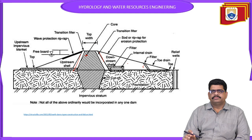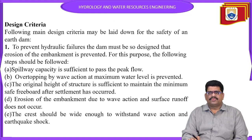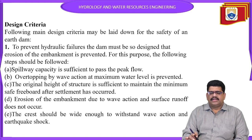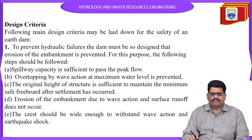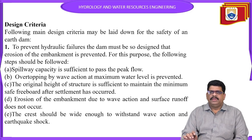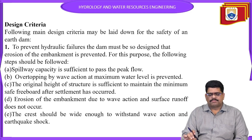Now the design criteria for construction of earthen dams. The design criteria means steps to prevent hydraulic failures, erosion of the embankment, and any other failures. The first step is that the spillway capacity must be sufficient to pass the peak flow — that is the main important criterion for earthen dams. The spillway capacity must be more than the required flow.